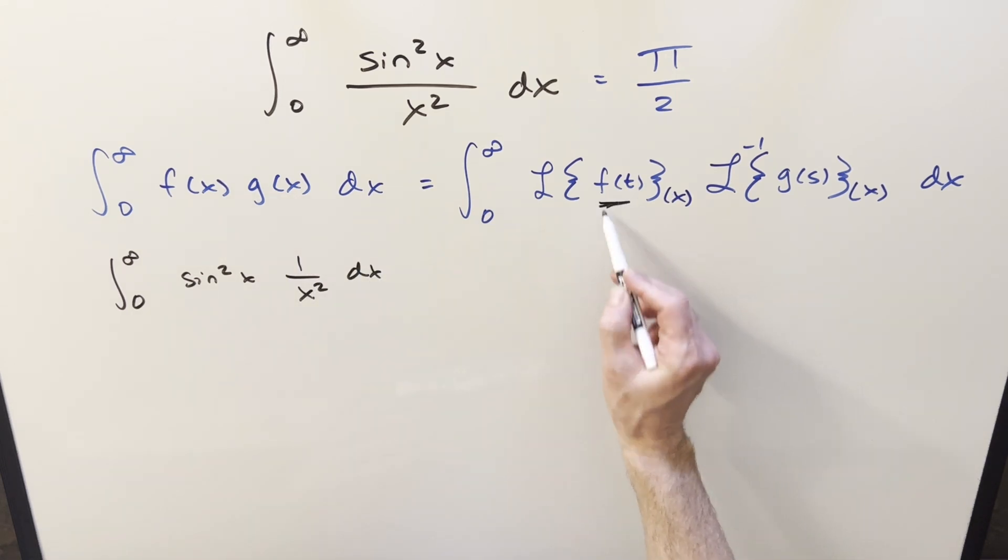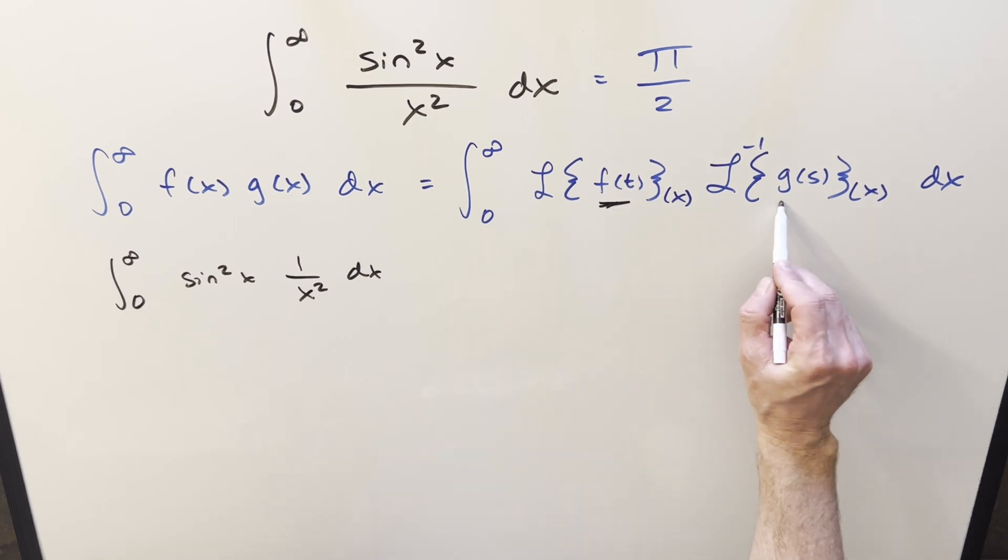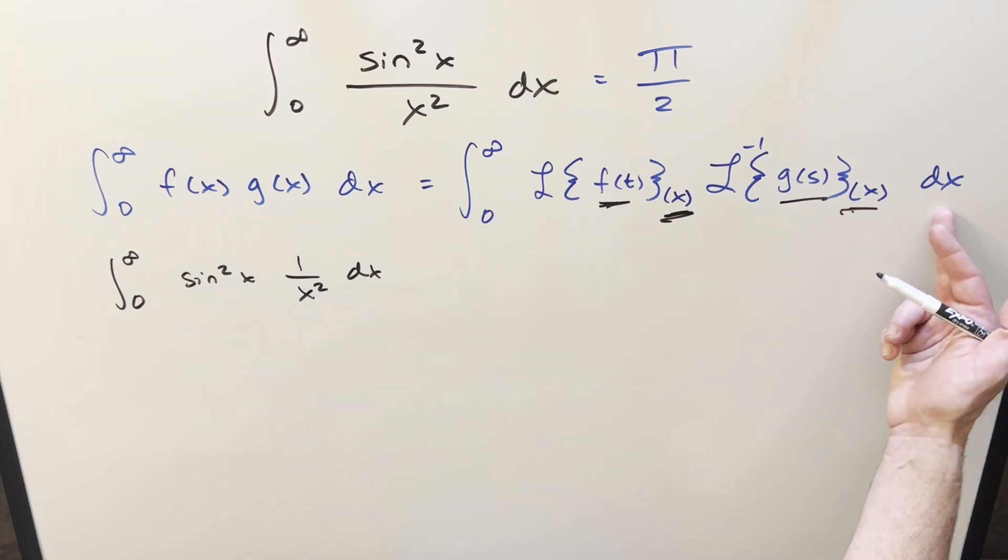Now in our formula, when we do this, you'll notice we're using a different variable inside here. We've got this function in terms of t, function in terms of s. But with this t variable and this s variable, it doesn't really matter what you choose. What matters is what's coming out of this. The output of this, it does need to be x if we're going to be integrating with x.